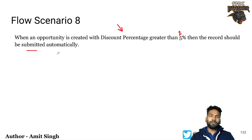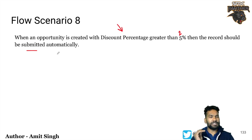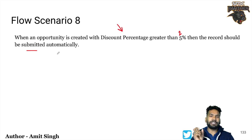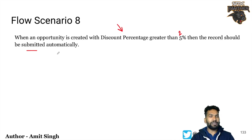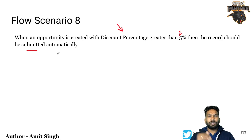On a high level, we will create a record of type Opportunity. There is a field called Discount Percentage, and if that field has a value greater than 2%, we will automatically submit that record to the approval process.